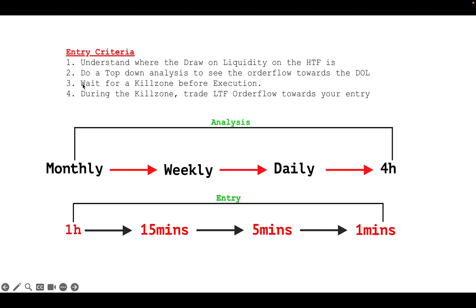The third criteria is waiting for a consolidation before execution. Consolidations are where expansions happen, where distribution happens, where you get out of consolidation and then expand. They are where the reversals occur.